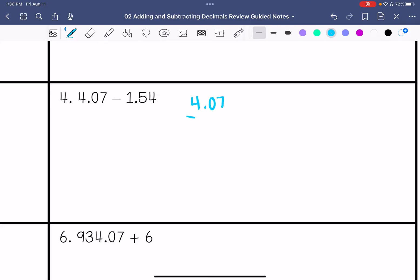4.07 minus 1.54. 7 minus 4 is 3. We have to borrow. 10 minus 5 is 5. And then we borrow. That should be a 3. 3 minus 1 is 2. Bring our decimal straight down. 2.53.